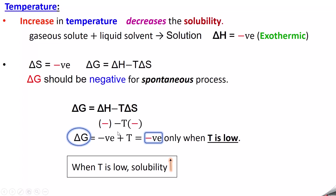Since both delta H and delta S are negative, the term negative T·delta S becomes positive. Delta G must be negative for any spontaneous process. For the dissolution of gaseous solute in liquid solvents to be spontaneous, delta G should be negative. This is achieved when temperature is low — at low temperature, delta G will be negative. So when you increase the temperature, the solubility decreases.